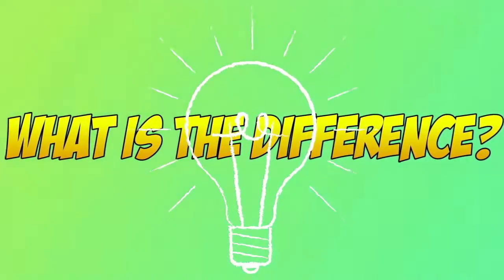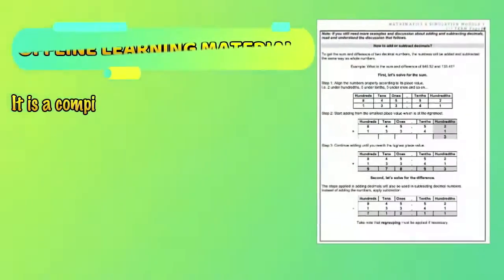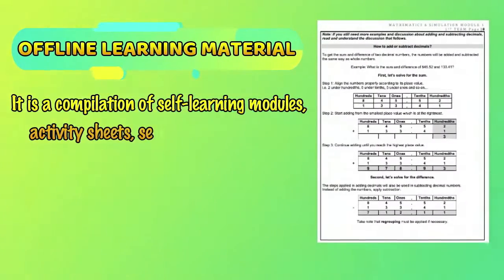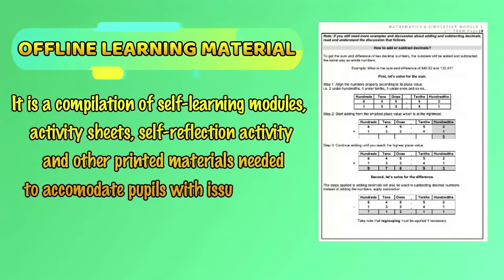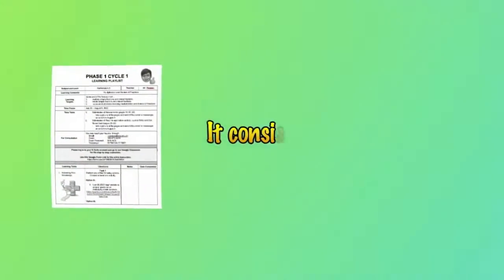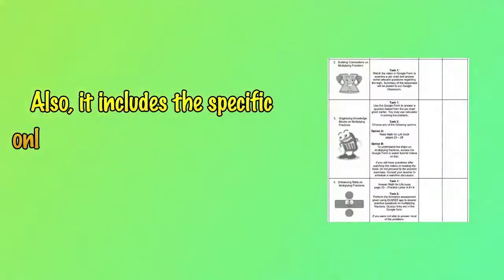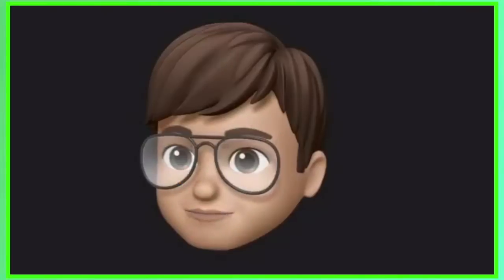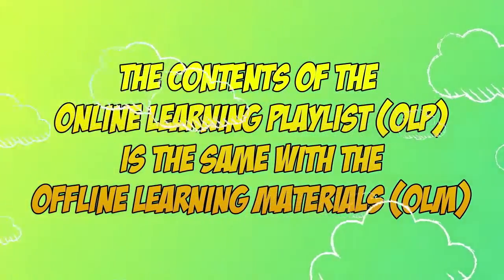But what is the difference? Offline learning material is a compilation of self-learning modules, activity sheets, self-reflection activities, and other printed materials needed to accommodate pupils with issues related to internet connectivity. While the online learning playlist consists of activities that students will engage in to learn the lesson, and includes a specific online learning platform where learning will take place. FYI, the contents of the online learning playlist are the same as the offline learning materials.